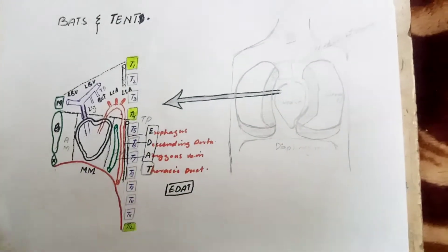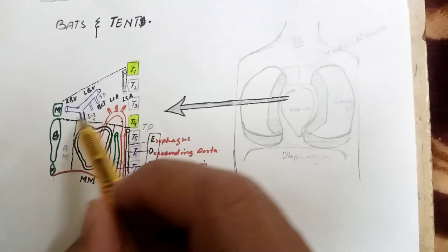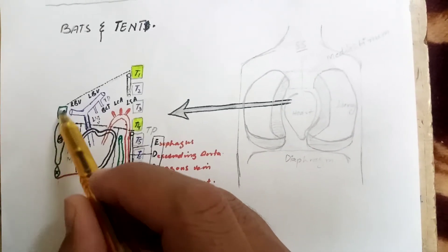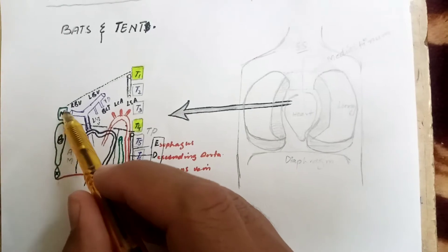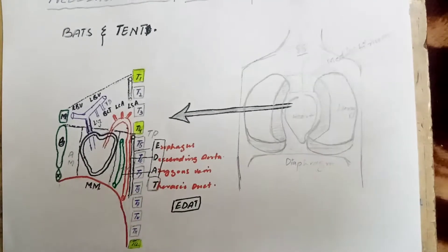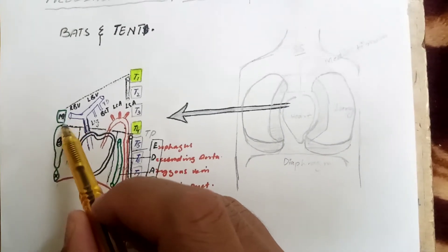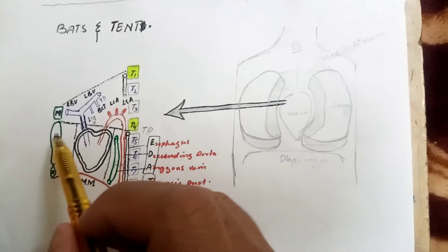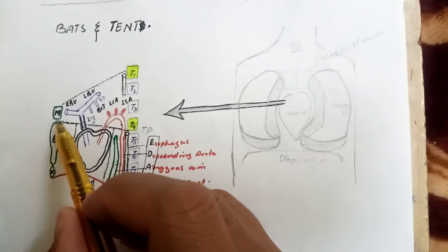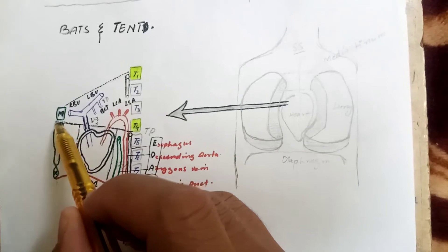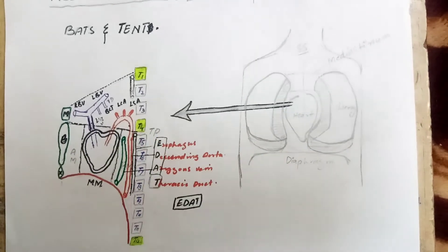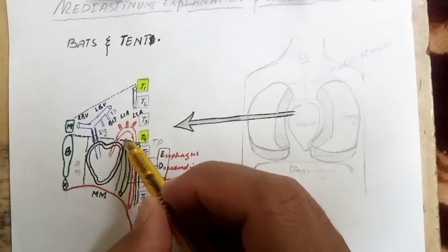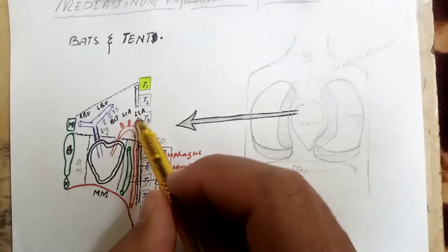The mediastinum extends from the sternum up to T1 to T12. The sternum is divided into three parts: the manubrium, the body, and the xiphoid process. There is a sternal angle between the manubrium and the body of the sternum. I am going to draw an imaginary line from the sternal angle up to the lower border of T4, which is called the thoracic plane.